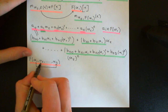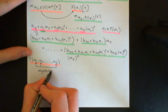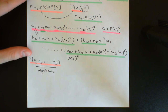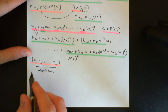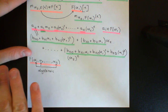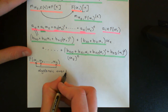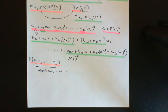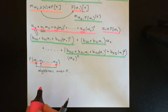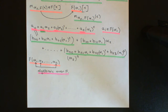Every single one of these is algebraic over F. The general assumptions — that these were all elements in L but outside of F — still hold. But now we're going to add the assumption that they're all algebraic over F as well, and we're going to try to get some beautiful understanding of this.